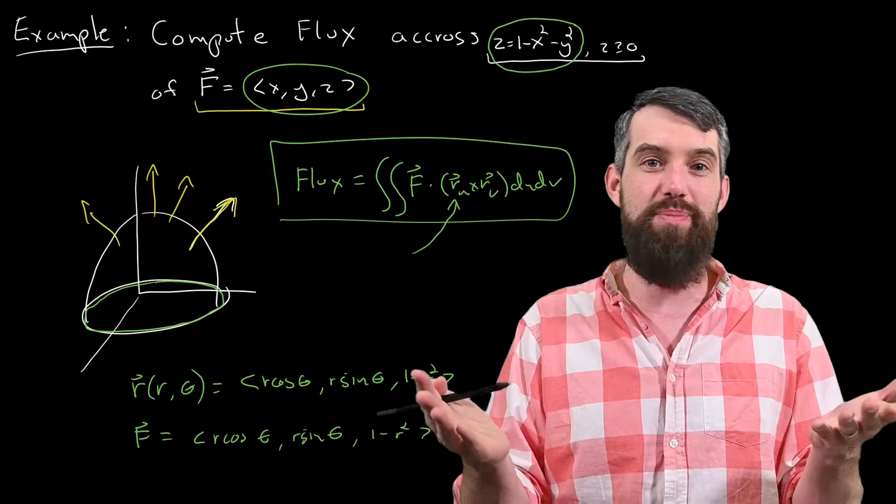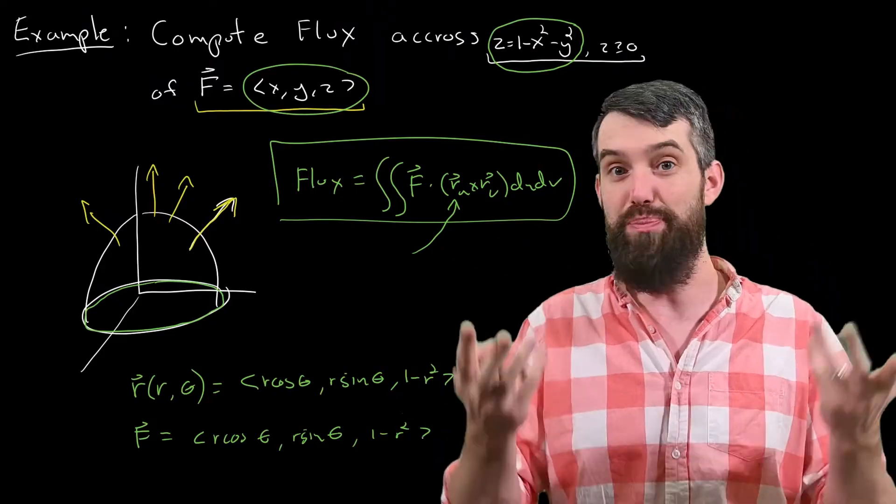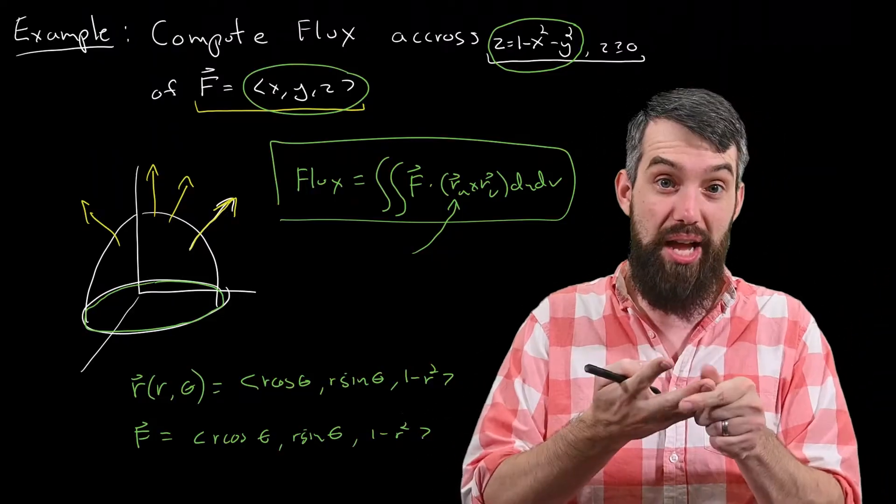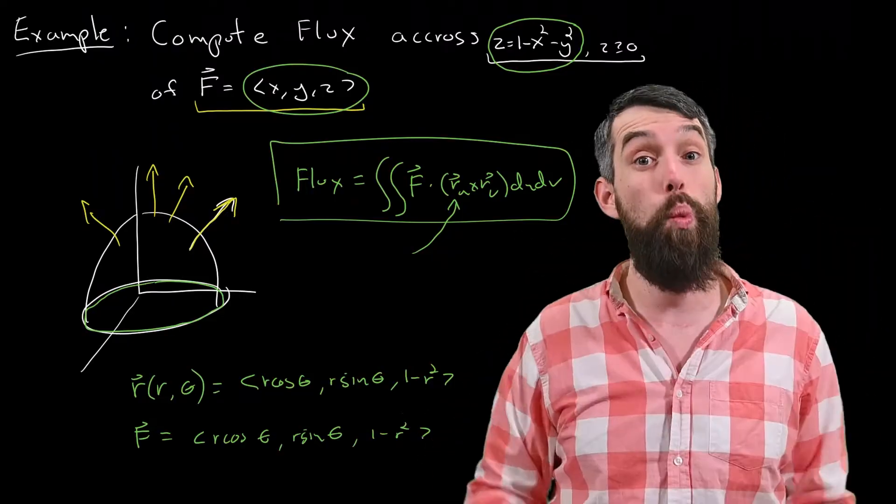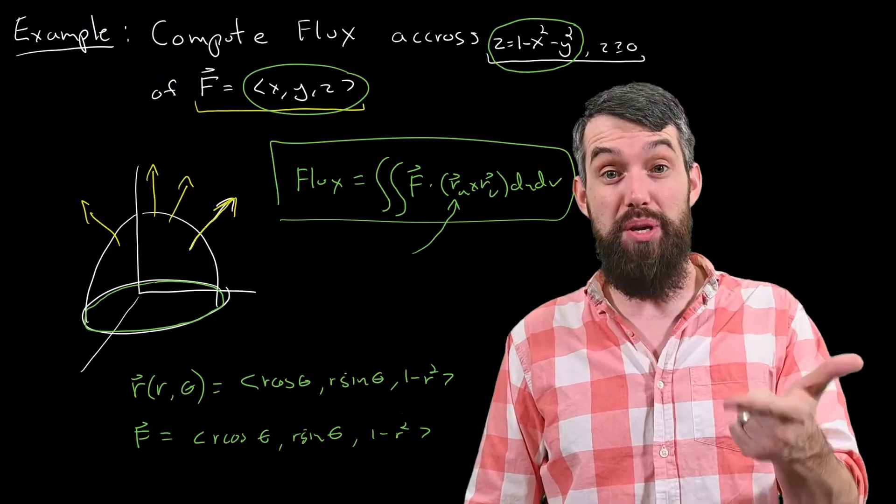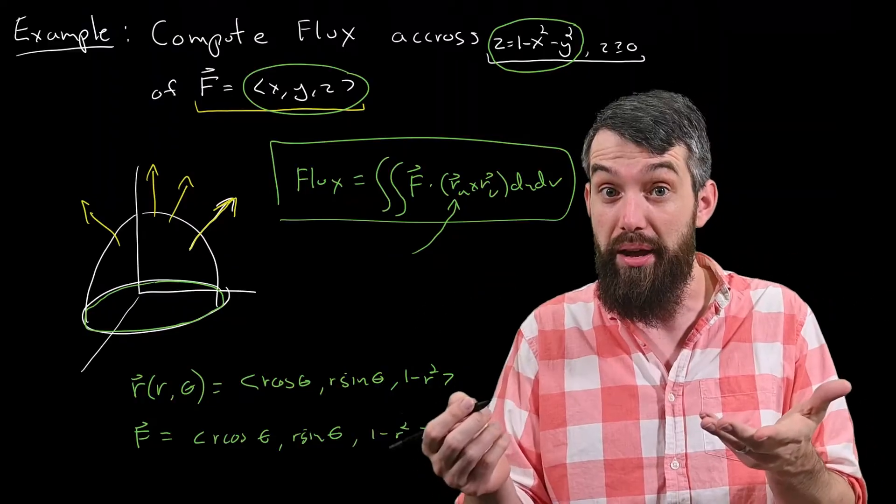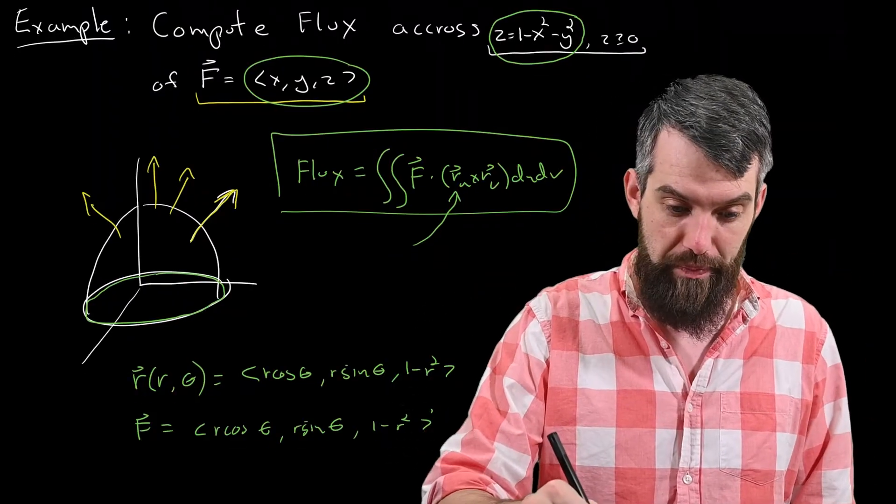And this is just a coincidence by the specific choice. Generally, if it was some other function of x, y, and z, you'd just plug in the r cosine theta, the r sine theta, and the 1 minus r squared into whatever those functions were going to be. So that's the r and the F, but I do have to compute the partial derivatives still, and plug them into my formula, which is the cross product formula.